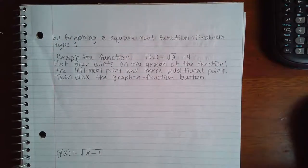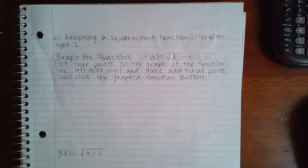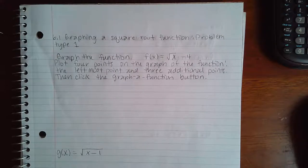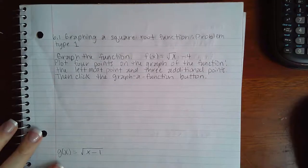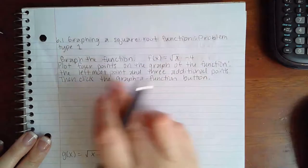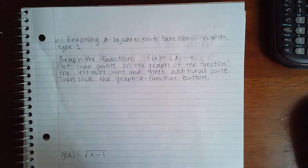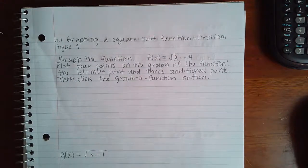Here we have a graphing a square root function problem, type one. It says graph the function f(x) equals the square root of x minus four — plot four points on the graph: the leftmost point and three additional points, then click the graph a function button. What we need to do is find the leftmost point, which is determined by figuring out the domain, so we know which values to start with and plug in.